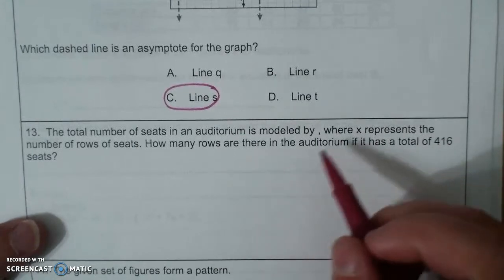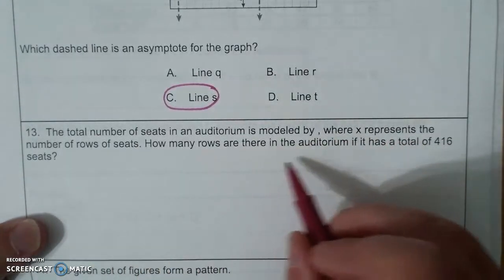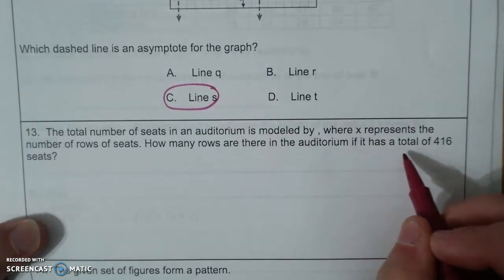The total number of seats in an auditorium is modeled by, where x represents the number of rows of seats. How many rows are there in the auditorium if it has a total of 416 seats?